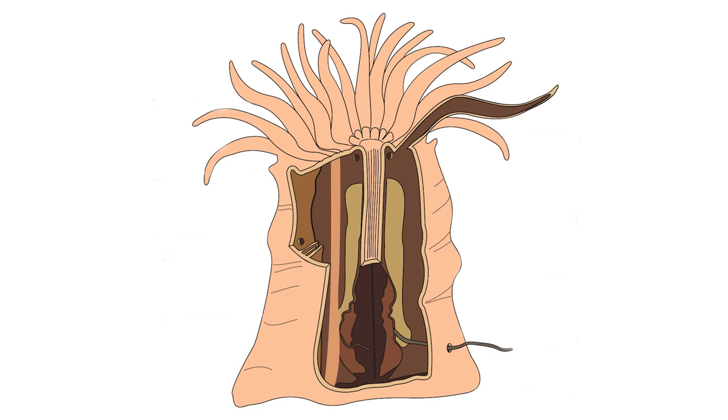How does an anemone look? Basically, anemones are a hollow sac with tentacles. It has an opening that is the mouth, and inside that sac we have radial walls with some muscles. Here you have a longitudinal section of how it would look — those lines are those walls. What we use to differentiate them is all this internal anatomy and those stinging capsules. We rely on internal characters to identify them.